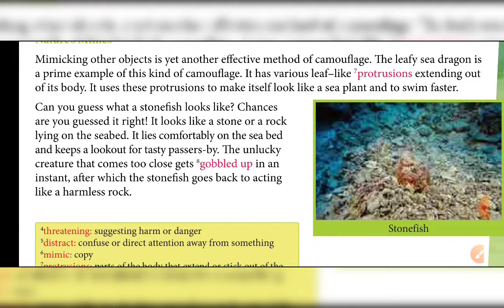The stone fish looks like a stone or a rock lying on the seabed. It lies comfortably on the seabed and keeps a lookout for tasty passersby — meaning prey it wants to eat. The unlucky creature that comes too close gets gobbled up, meaning eaten very fast. After that, the stone fish goes back to acting like a harmless rock — it is the biggest actor.